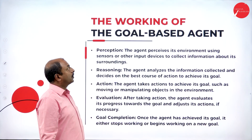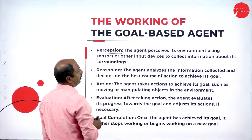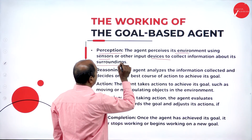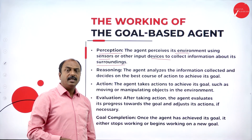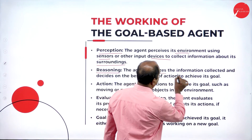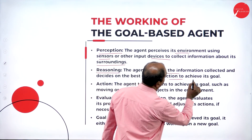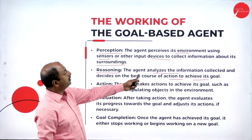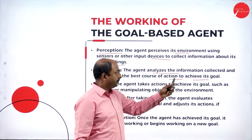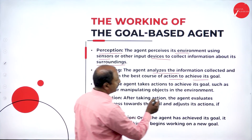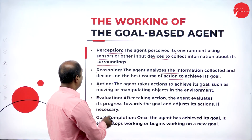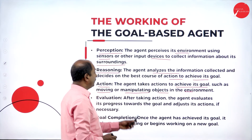Now let us see the functioning of the goal based agent. First is perception — the agent perceives the environment using sensors and other input devices to collect information about the surroundings. Data is accepted from the environment through sensors. Second is reasoning — the agent analyzes the information collected and decides the best course of action to achieve its goal. Based on the environment, analyzing the information from the devices, it takes the right action. Next is action — the agent takes action to achieve its goal, such as moving or manipulating objects in the environment.